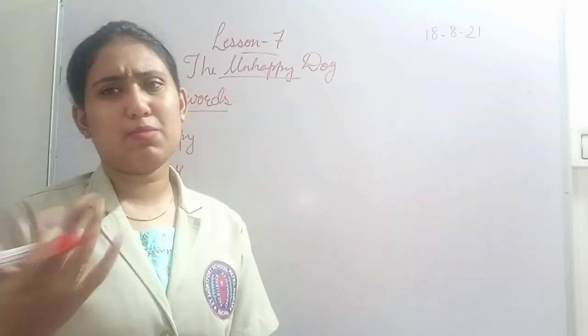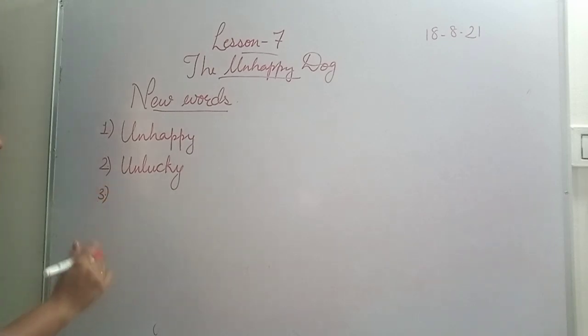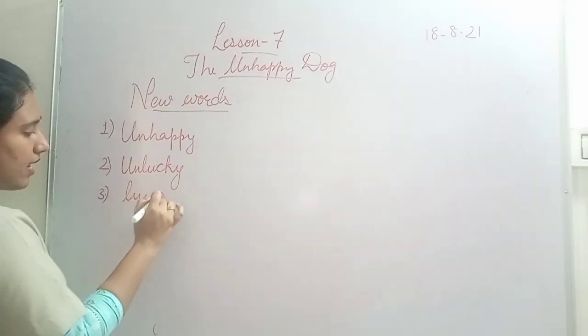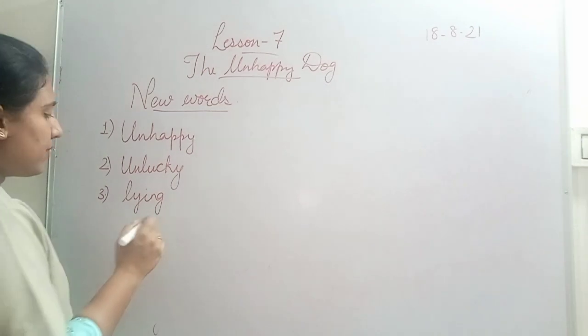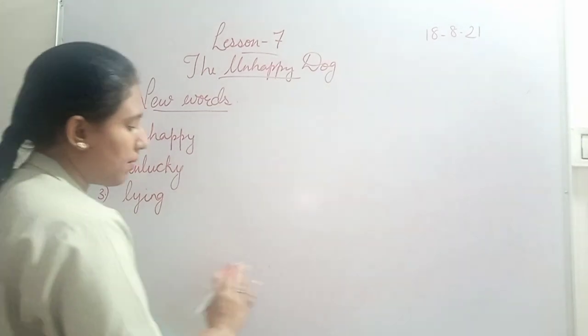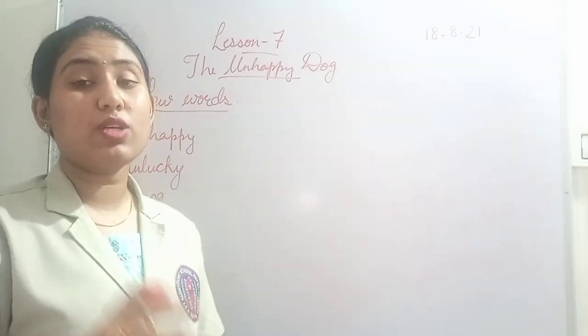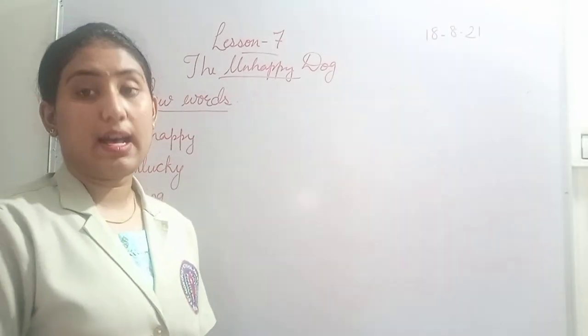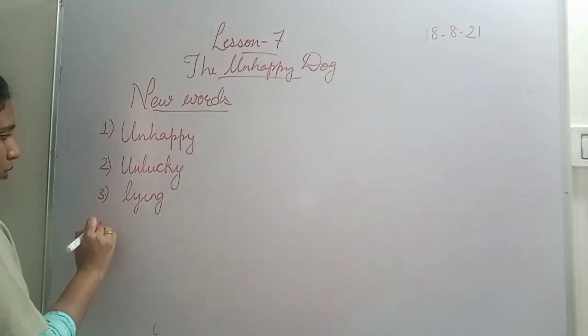Second is 'unlucky.' Unlucky means not lucky. Third is 'lying,' L-Y-I-N-G. What do you understand from this meaning? Lying means laying. When you need to lay on a table, in the lesson the cat was lying on the ground, we are lying on the grass. So lying means laying.